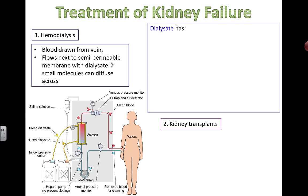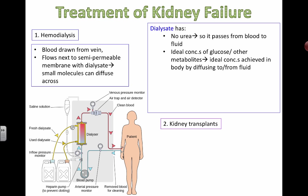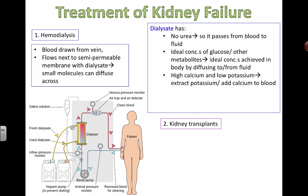Here are some features of the dialysate and the reasons for them. It contains no urea, so urea travels down its concentration gradient out of the blood — which is exactly what the kidney would normally do. It has ideal concentrations of glucose, amino acids, and other metabolites that need to be maintained in the blood, so you don't lose those things and the balance is kept.